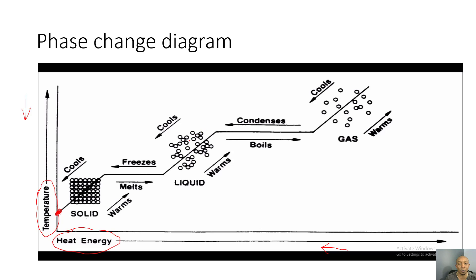Then the liquid continues to cool and the particles condense and come closer together until they begin to freeze — meaning the liquid is going from a liquid to a solid. Eventually all the liquid particles freeze and turn into a solid.